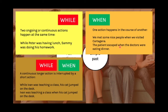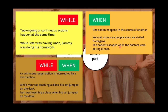Or we can connect those two sentences using 'when': 'Ivan was teaching a class when his cat jumped on the desk.' You can connect those two sentences — one longer action interrupted by a short action — using either 'while' or 'when.' Finally, you can connect two actions using 'when' when an action happens immediately after another. 'Philip stopped singing when the teacher entered the classroom.' One longer action finishes when another action happens — Philip was singing, then he stopped when the teacher entered.